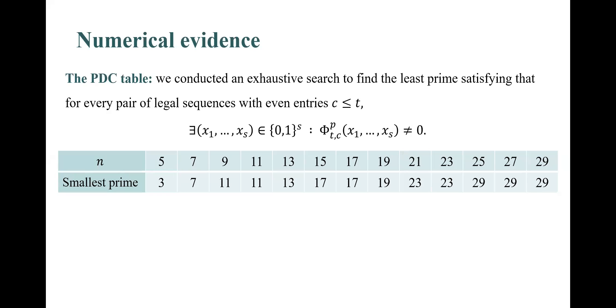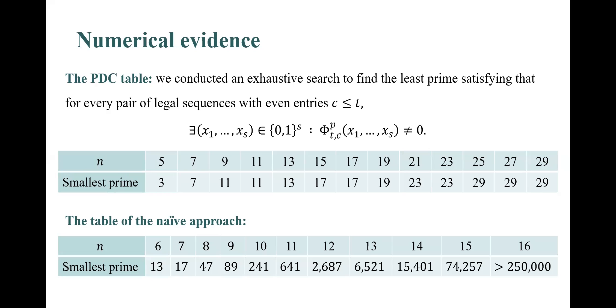Similar to the experiment we conducted for the naive approach, we conducted an exhaustive search to find the least prime satisfying that for every pair of legal sequences that have even entries and satisfy that c is smaller or equal to t, there exists boolean values x_1 to x_s, such that F_t_c mod p is not zero when evaluated on x_1 to x_s. As we can see, the primes found are very small in comparison with n, and the growth seems to be linear in n. For comparison, here again is the table we got from the experiment we conducted for the naive approach.